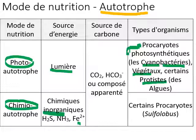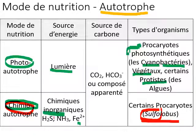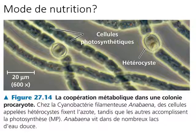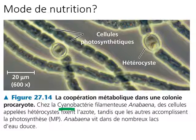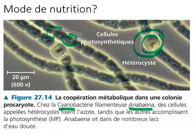Some prokaryotes get their food from chemicals — like Sulfolobus. What word do you see? Sulfur. What do you think it uses? Sulfur. Here is a type of colonial prokaryote called cyanobacteria — the genus name is Anabaena. It has structures called heterocysts that it uses to get nitrogen, and it also has photosynthetic cells.